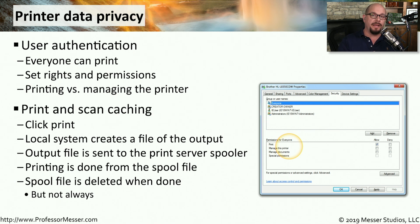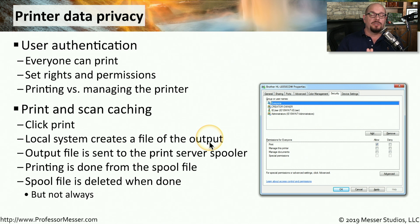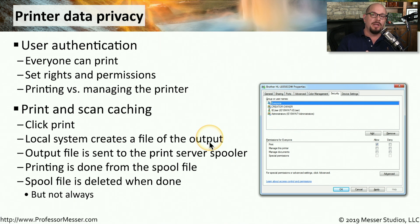Another important security concern is what happens to those print jobs once they've been printed. When you click the Print button on your computer, your local computer creates a file that contains that print output. Your computer sends that file to the print server, which is often contained inside of the printer itself. That file is put into the print spooler, and the spooler manages what print jobs print at what time and in what order. Once the printer is available and your job comes to the top of the queue, the print spooler prints that job. On many printers, after your printout is complete, that print spooler file is deleted. But on some printers, the file is kept on the system until space is needed — meaning if somebody gains access to those files, they could potentially have access to anything you've printed. You might want to contact the manufacturer of your printer to find out exactly what happens to those print spooler files once your printout is complete.